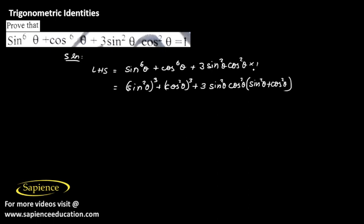This last term multiplied by 1 will not change the last term. 1 into any number is the same number and 1 can be written as sin square theta plus cos square theta.